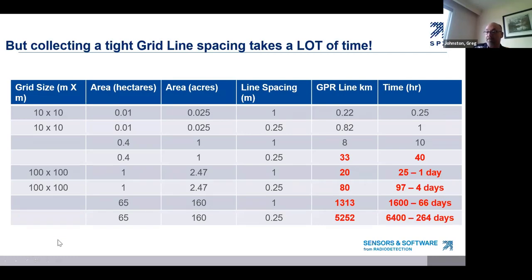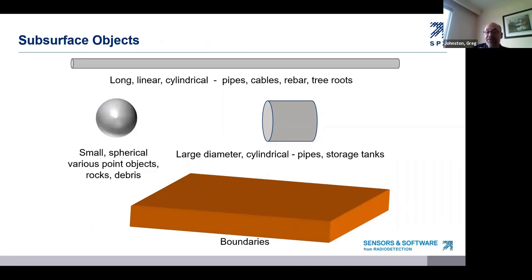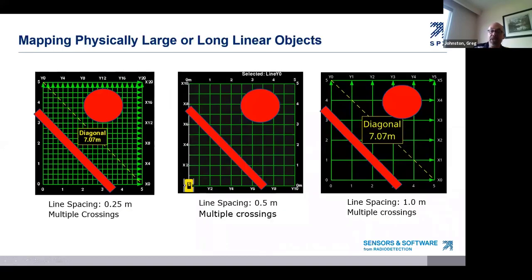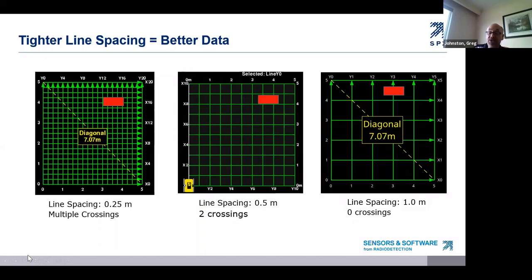We've got to be careful with increasing line spacing. If you're trying to increase the line spacing, you have to look at the size of the target you're trying to detect. There are all kinds of objects buried in the ground with different shapes and sizes. You want to collect GPR data across your target as many times as possible — that is how you detect it and interpret it with confidence. If the object you're looking for is physically very large or long, that is good news as far as line spacing is concerned. We're looking for graves and potentially children's graves.